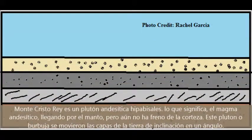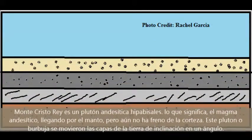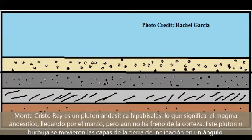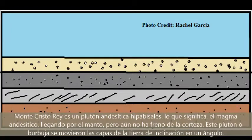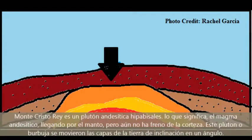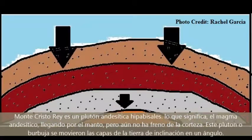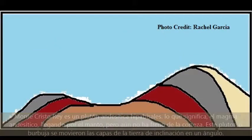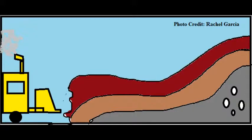Mount Crystal Rey is a hypovisceral andesitic pluton, which means andesitic magma came up from the mantle but didn't break the crust. This pluton or bubble moved the layers of the earth, tilting them at an angle. Natural weathering and erosion did take some effect on the rocks, but the dinosaur tracks were discovered thanks to human activity and mining.